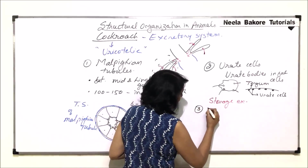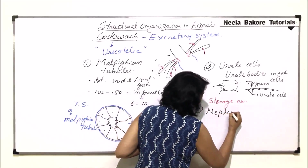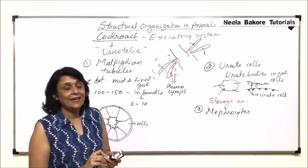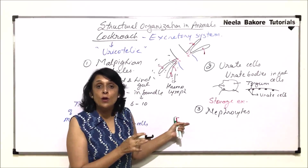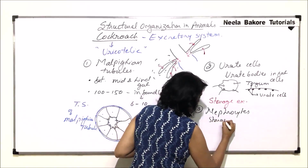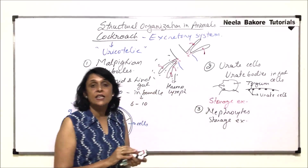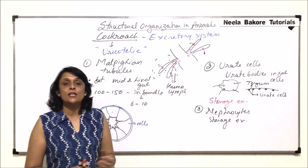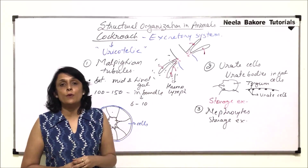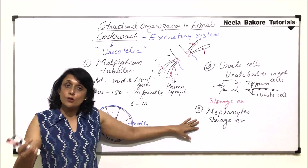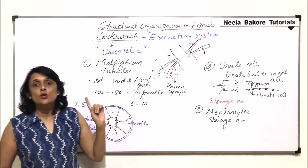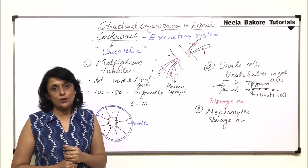The third structure is called nephrocytes. They also collect waste and get attached on the inner side of the pleura, again showing storage excretion. The waste is eliminated by storing it for some time. Once the cell is full of waste, the cell is lost along with the nitrogenous waste, which is uric acid in the case of cockroaches.